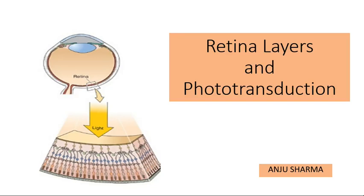Hey everyone, today we have a new topic of special senses — vision — which is very important from an exam point of view and applied both. In this video we'll be talking about retinal layers and phototransduction, which means how different receptors present in the retina convert light into a nerve impulse, and how that nerve impulse is transmitted to the brain so that we can see where light is present.